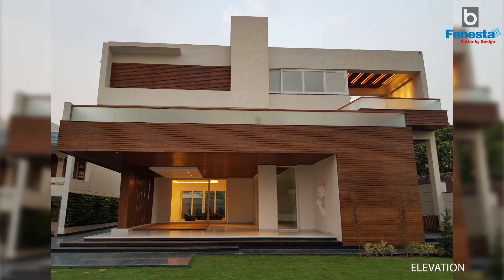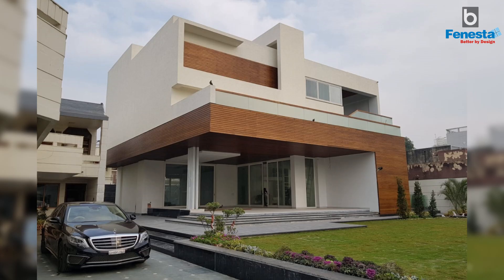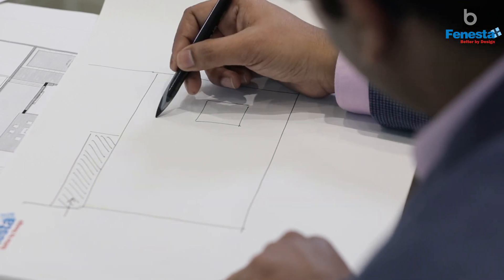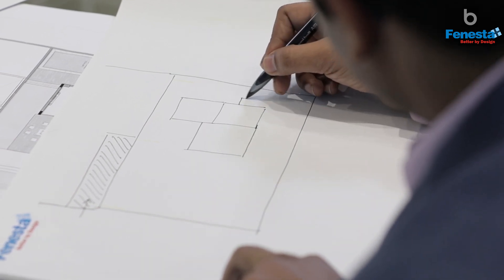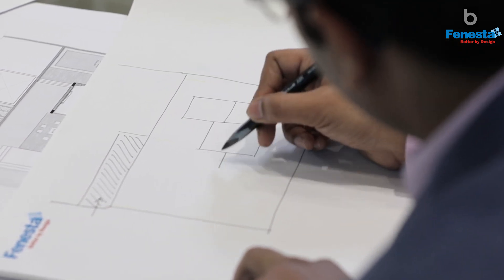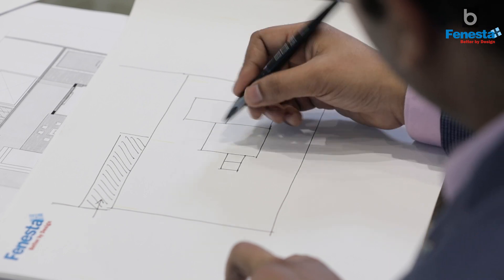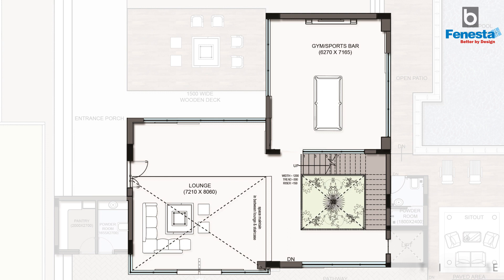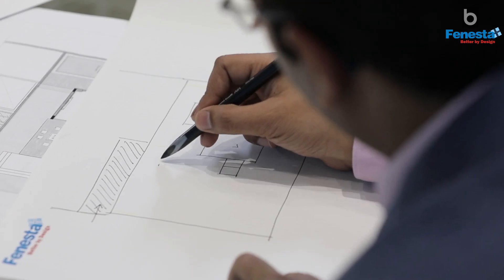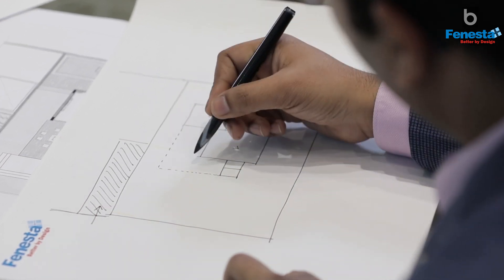The entrance to the existing house is from here and the built footprint of the house consists of multiple blocks — one here, another here, another one, and then a small block jutting out. These are the spaces on the ground floor level: the living room, the sports bar, the staircase area, and a huge cantilevered slab which forms the semi-outdoor space.